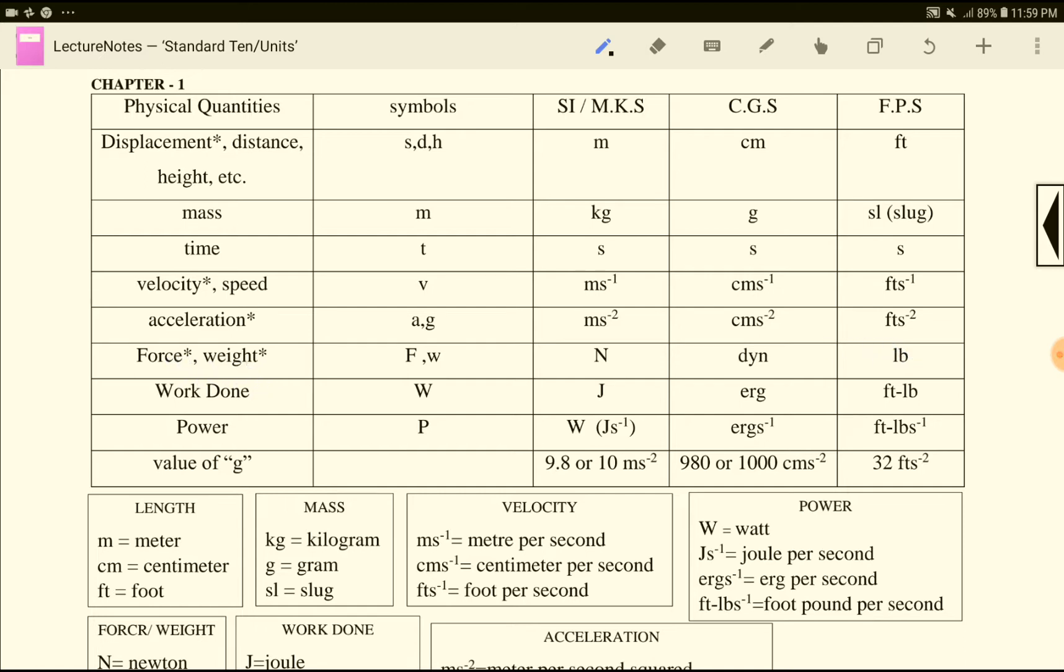Now force, weight. Force and weight are vectors. Weight you can measure. The units are: MKS system is Newton, CGS system is dyne, FPS system is pound.